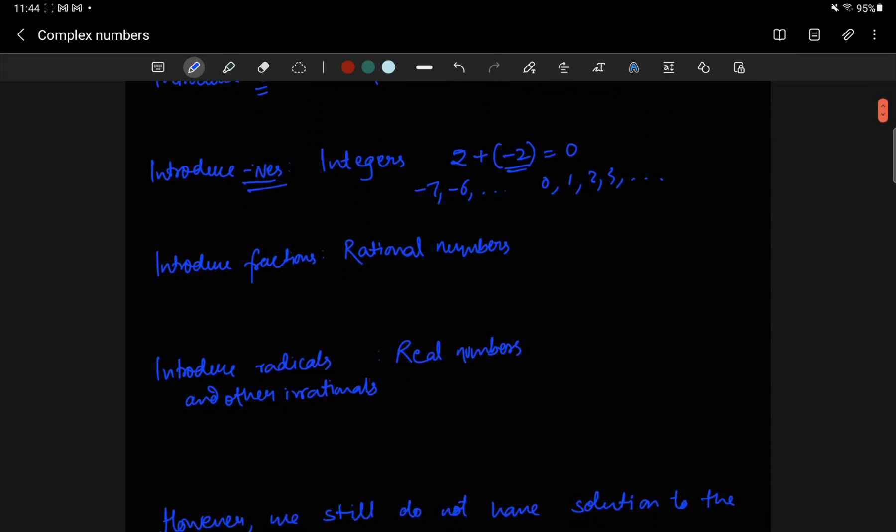The next thing to be introduced was fraction. What if you're not interested in a whole object, but one half of the object. So that led to the development of rational numbers, where rational numbers are numbers of the form p over q, where p and q are integers. Your common examples are negative 1/7, 3/4, 10 over 11, etc.